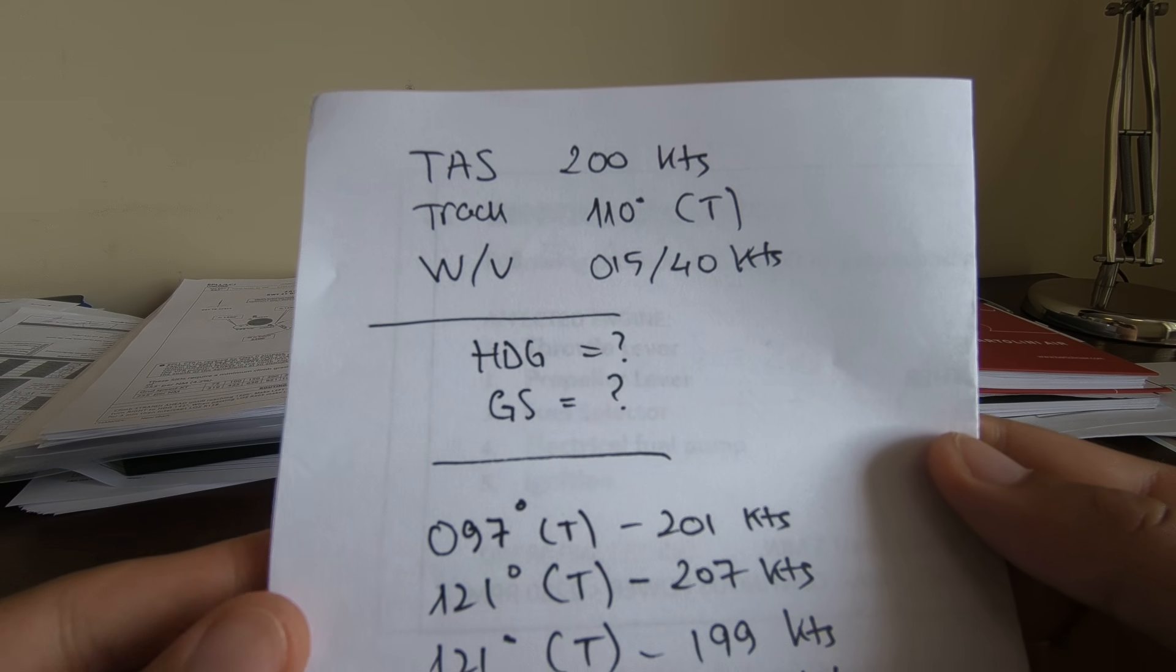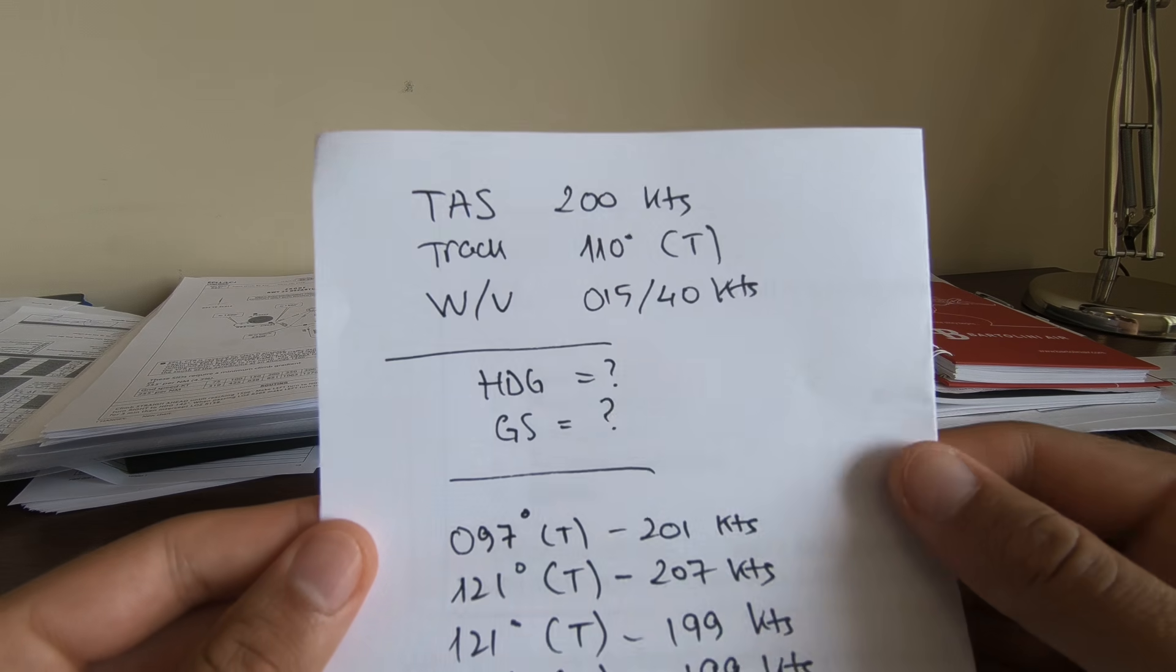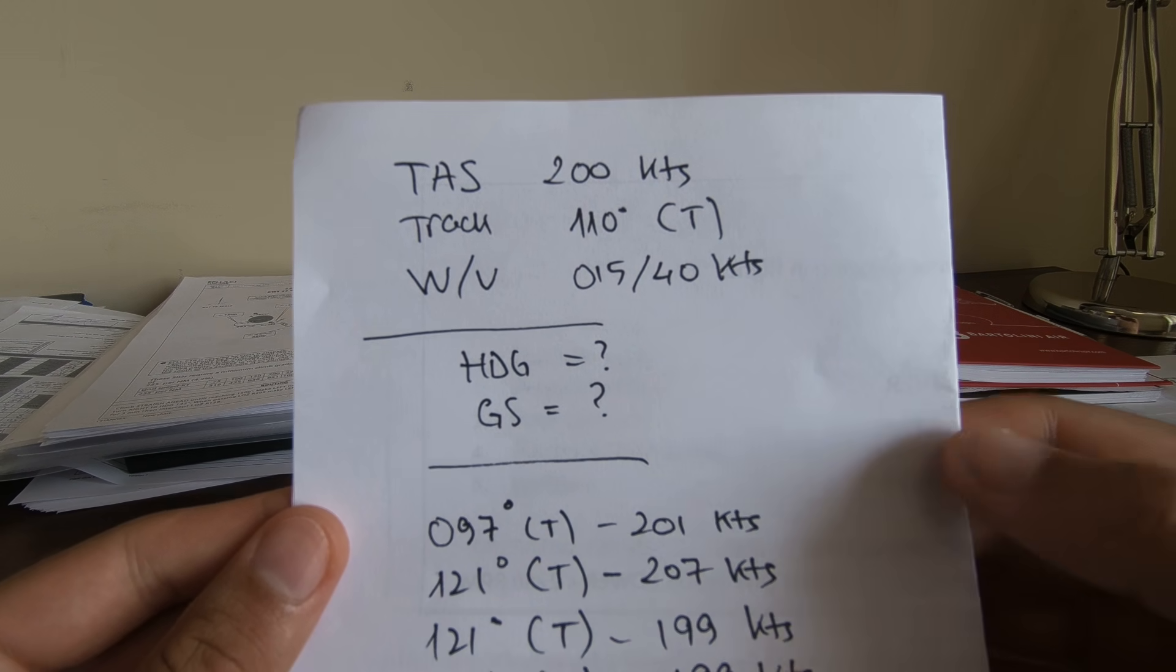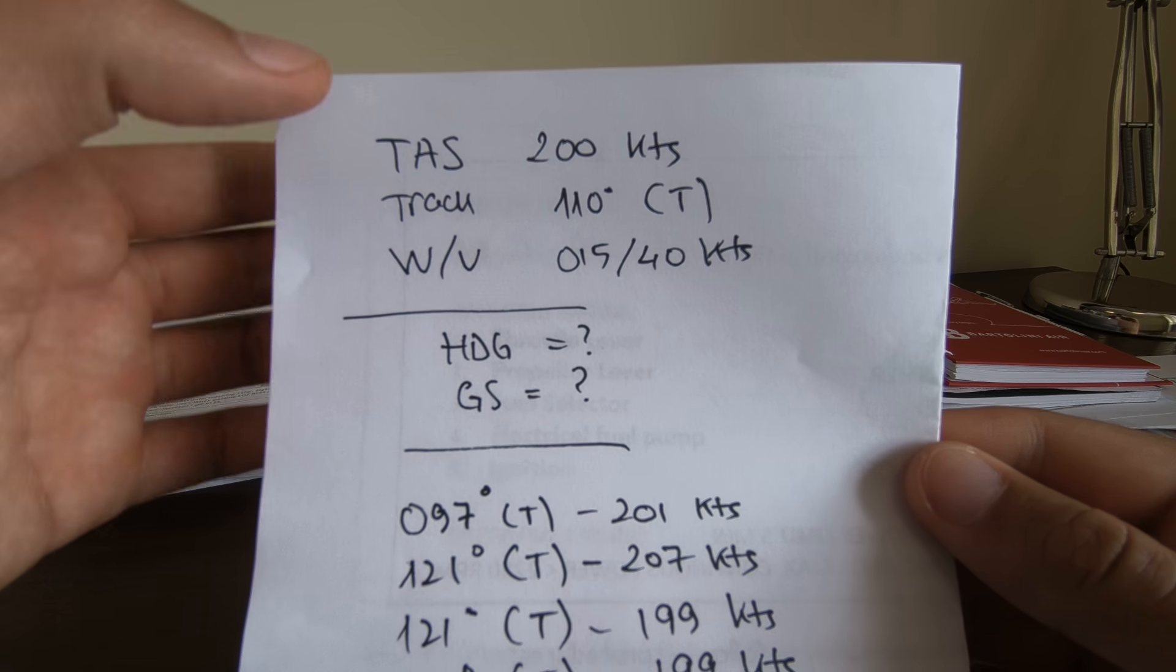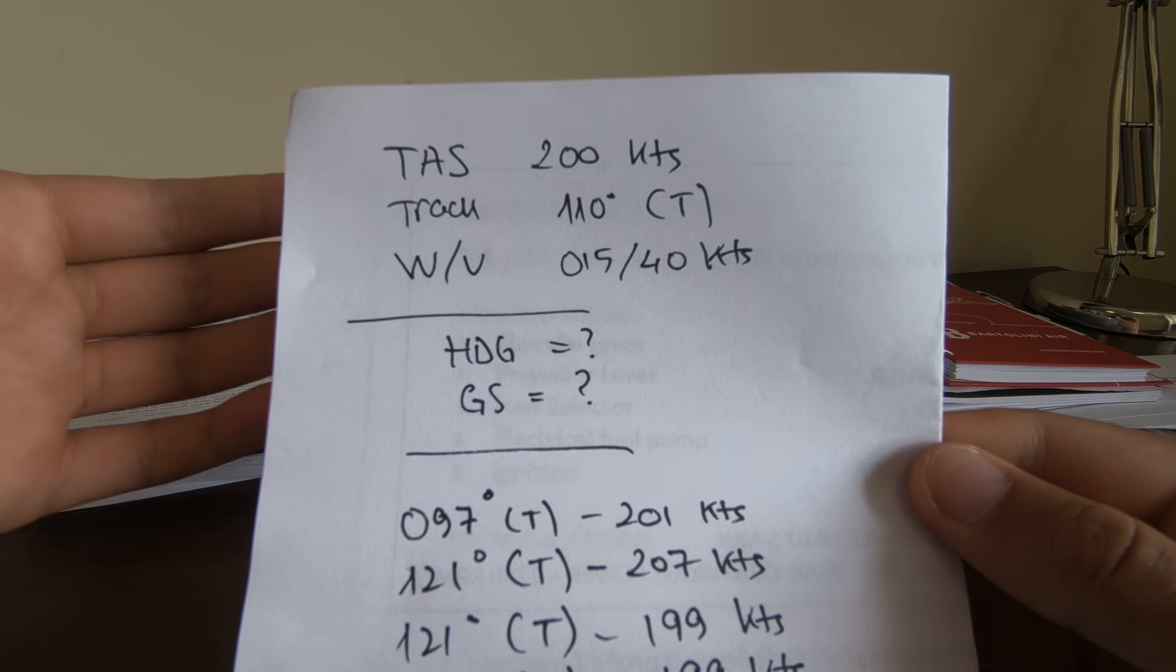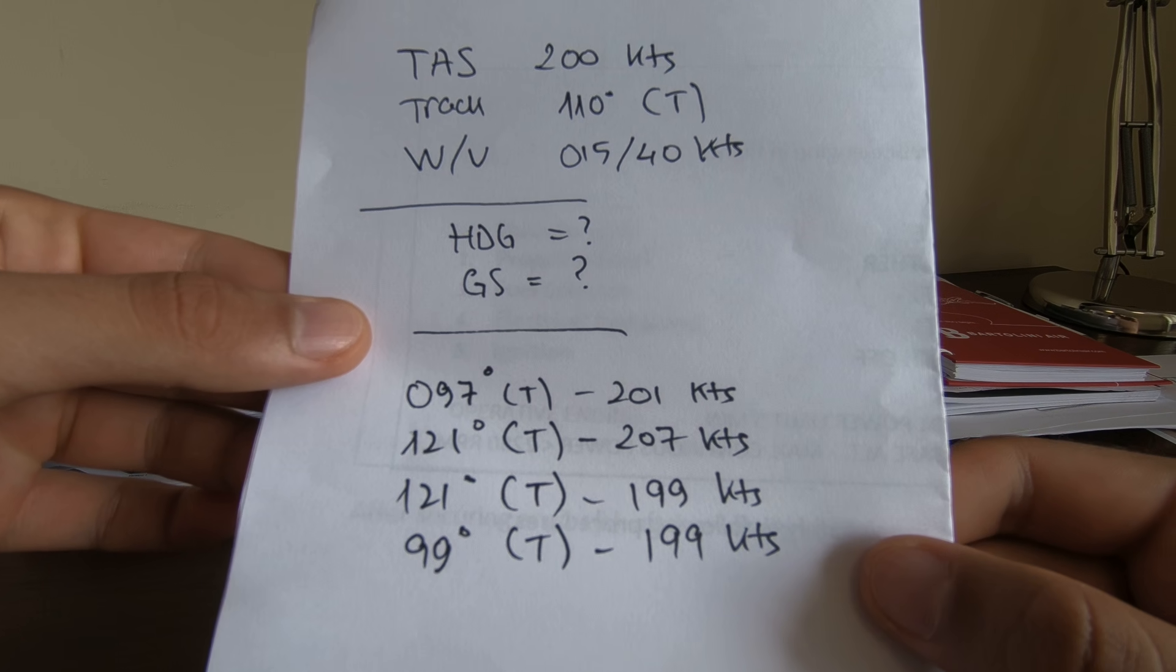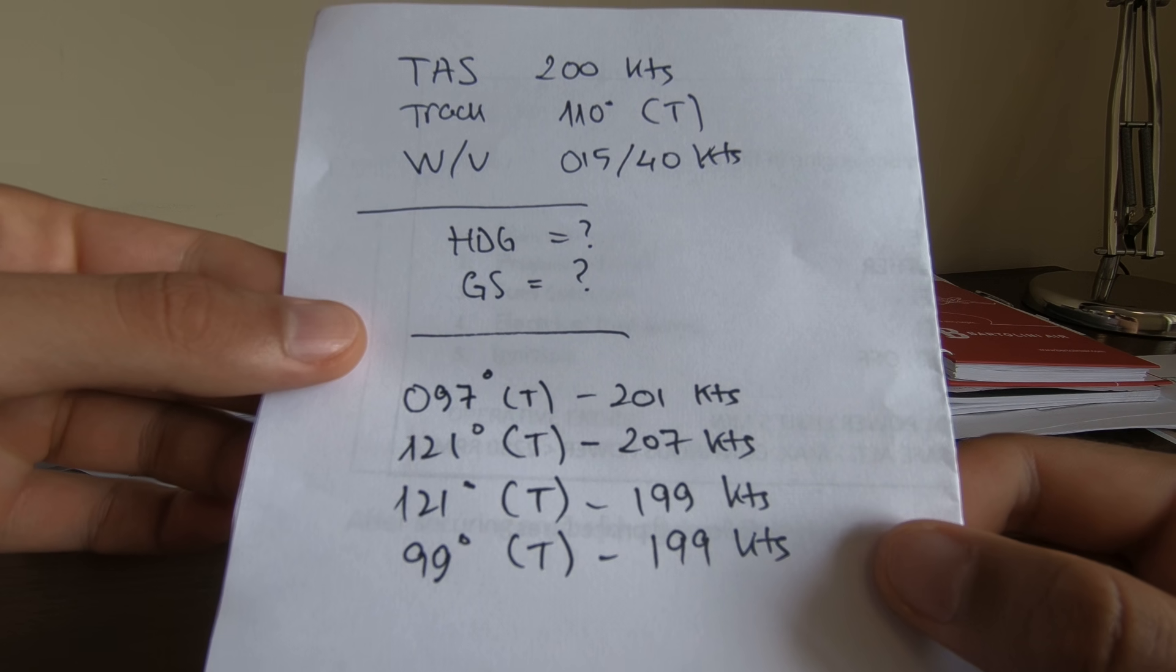Hello everybody, welcome back to the channel. Today we're going to solve this question using a CRP5 and maybe an E6B flight computer as well. So let's go. TAS is 200 knots, track is 110 true, wind is 015/40 knots. What is the heading and the ground speed? Here we have the options, but first let's start.